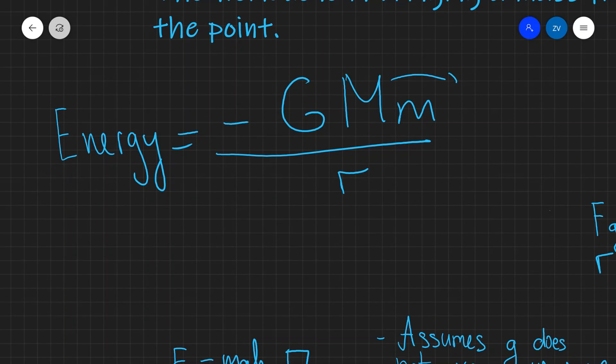In this equation, M is, in this case, would be the mass of the earth or mass of one of the objects. So let's say mass of the earth. This m over here will be the mass of the object.